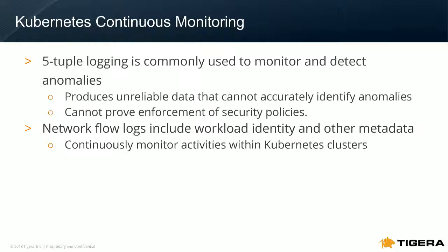The other issue with 5-tuple logging is it does nothing to say about what policies actually allowed or denied that traffic. Let's say I can puzzle out what that thing was, and one was a PCI workload and one was a non-PCI workload, and I theoretically have a policy that says PCI workloads shouldn't be able to talk to non-PCI workloads — but I see it happened. I have no idea, in most common logging environments, what policy allowed that traffic to flow. So obviously there's a policy misconfiguration, but I have no way of knowing which actual policy allowed that traffic.